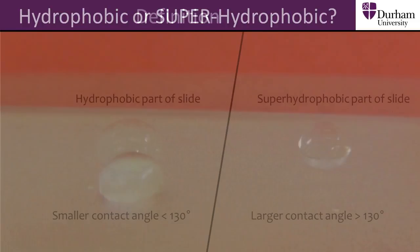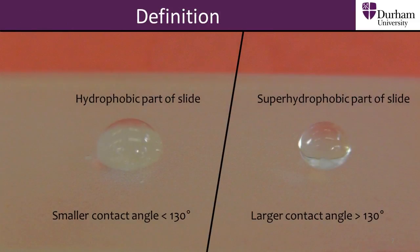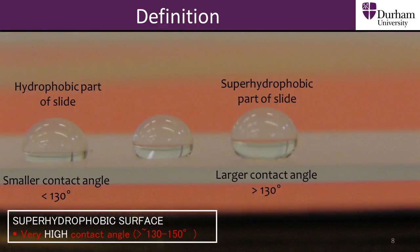Superhydrophobic surfaces also have a bigger water contact angle than regular hydrophobic surfaces — over 130 to 150 degrees, depending upon the definition.